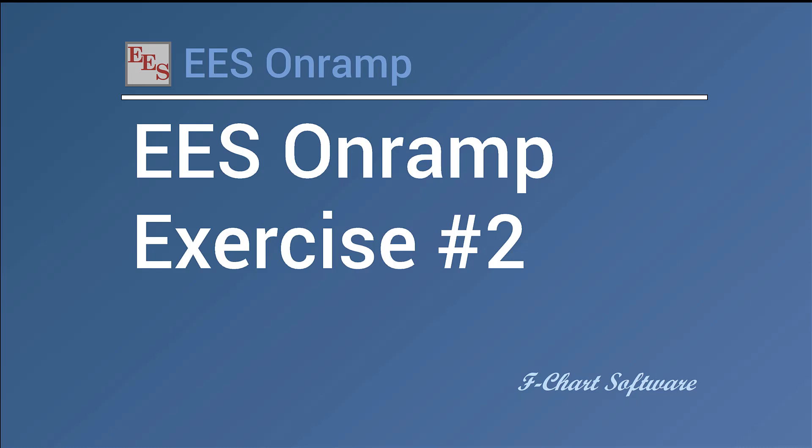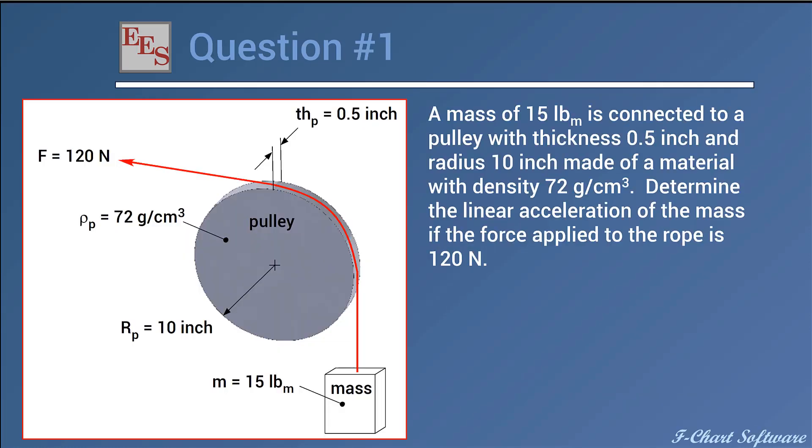This one has two different questions. Here's the first question, a dynamics question. You have a pulley lifting this mass. You can see the radius, the thickness, and the density of the pulley material, and you're putting a force of 120 Newtons on the rope. The question is, with that 120 Newtons, you need to figure out how fast the mass is accelerating. You can neglect any kind of friction for this problem, but you can't neglect the moment of inertia of the pulley.